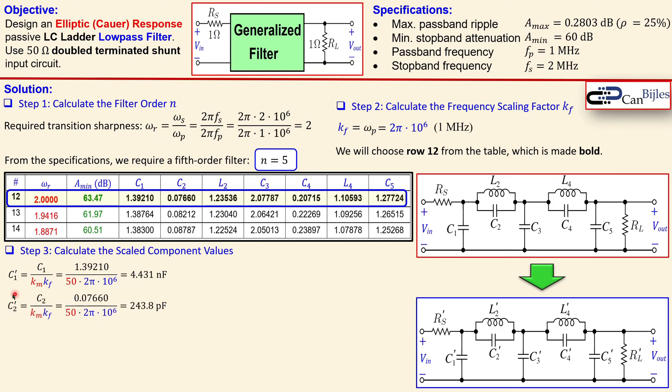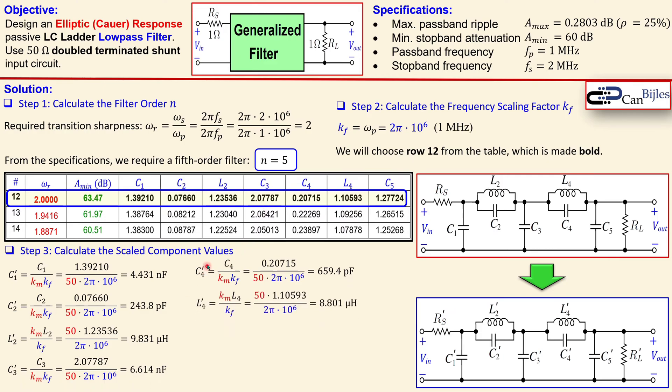In a similar form for C2 prime now you get this entry which is this much picofarads. Now L2 prime which is from this coefficient, now K_m is here but K_f will be in the denominator. Again you calculate this, and C3 prime from this coefficient, and C4 prime and L4 prime in a similar form, so you actually follow these coefficients one by one. Now the final one is C5 prime, and of course also RS prime and RL prime, where they are 50 times 1 which is 50 ohm, and also the other one is 50 ohm RL prime.